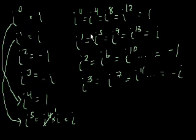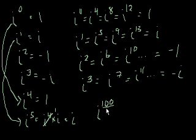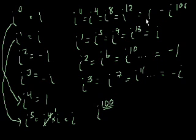So why is this useful? We see a pattern — it's a cycle of 4. We can use this to determine what i to any power is. If I were to ask you what i to the 100th power is, we see that 100 is a multiple of 4 — 4 times 25 is 100. So i to the 100th falls into the multiple-of-4 category, and we know that i to the 100th power is equal to 1.